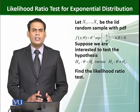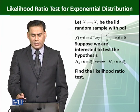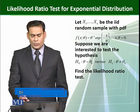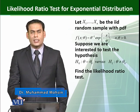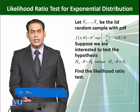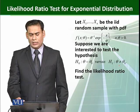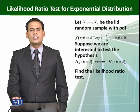Let x1, x2 up to xn be the iid random sample with the PDF f(x, theta) = theta^(-1) * exp(-x/theta). That is actually the usual exponential distribution. Suppose we are interested to test the hypothesis theta equals theta naught versus H1: theta is not equal to theta naught. That is a simple versus simple hypothesis.